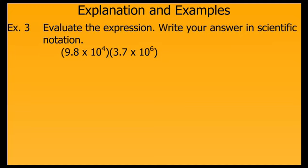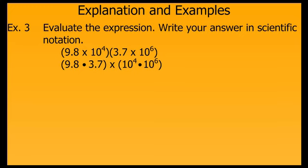Sometimes we need to take numbers written in scientific notation and perform operations on them — in this case, multiplication. The easiest way to do that is to multiply the c part separately and the powers of 10 part separately. That means we will multiply 9.8 times 3.7, and then 10 to the 4th by 10 to the 6th, then combine our results. 9.8 times 3.7 gives us 36.26, and 10 to the 4th times 10 to the 6th gives us 10 to the 10th, using our product of powers property to add those exponents.